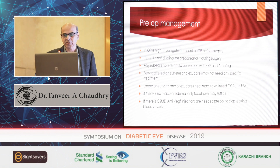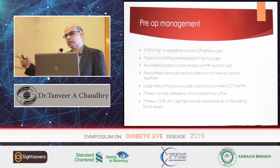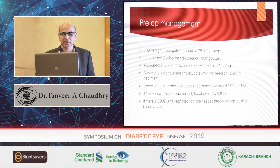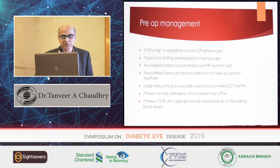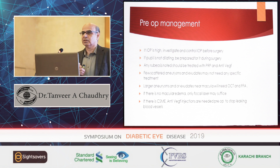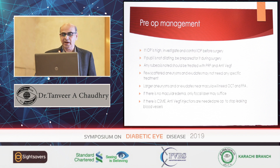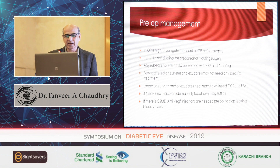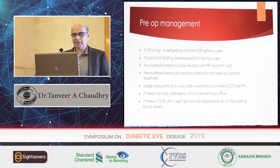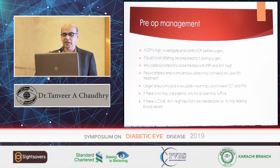If the pupil is not dilating, make a note of that so you know when the patient comes back. Any rubeosis noted should be treated first — do PRP and anti-VEGF injections. A few small aneurysms and exudates may not need any specific treatment, especially if there is no retinal thickening in the central area. But larger aneurysms and exudates need treatment.